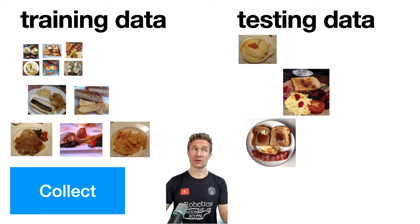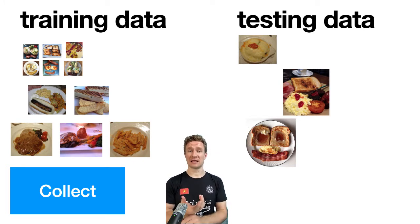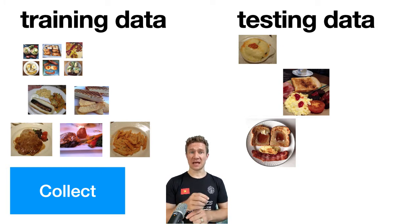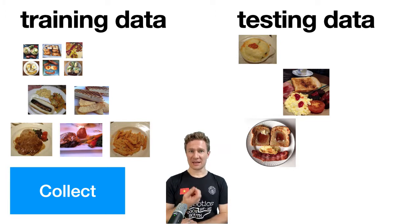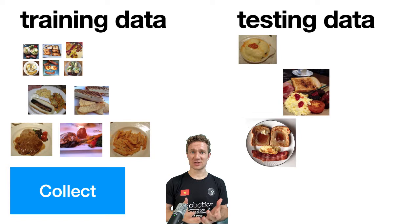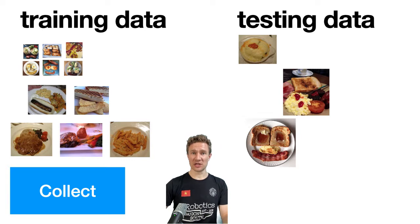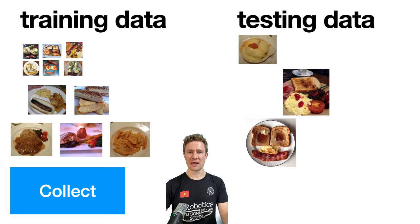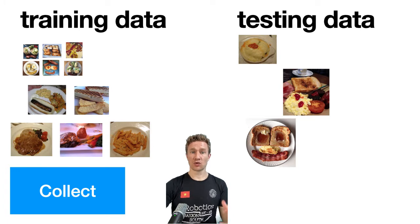We talked last time about training data and testing data and the difference between them. Training data is the data you give a machine learning algorithm to try to teach it your different categories. You say these are pictures of what I mean by breakfast, these are lunch, and these are dinner. Testing data is the data you provide that allows your machine learning algorithm to be tested to see how well it understands those three categories.